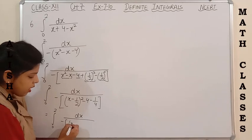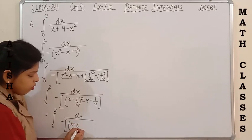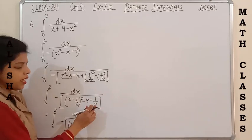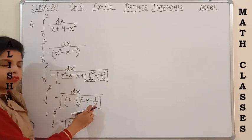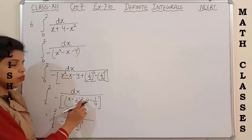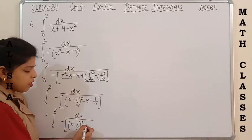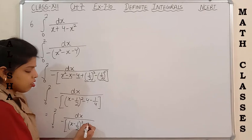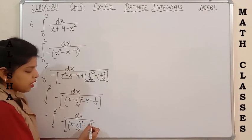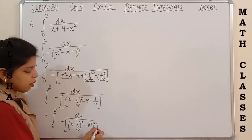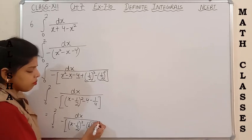So it becomes (x - 1/2)², and taking the LCM of 4: 4×4 becomes 16, so minus 16 minus 1 becomes minus 17, giving minus 17/4, which can be written as minus (√17/2)².